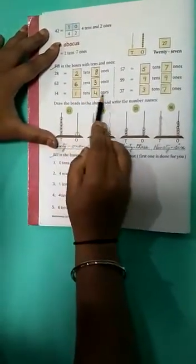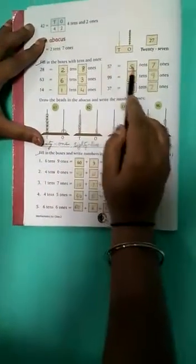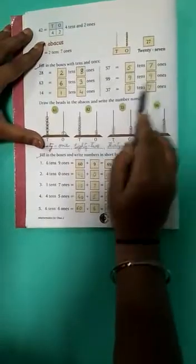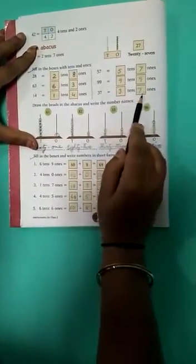63, 6 tens, 3 ones. 14, 1 ten, 4 ones. 57, 5 tens, 7 ones. 99, 9 tens, 9 ones. 37, 3 tens, 7 ones.